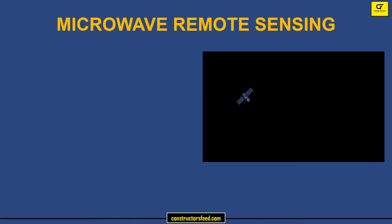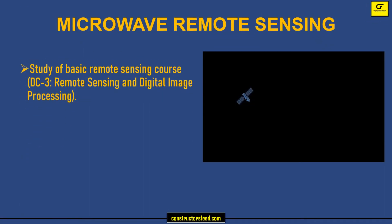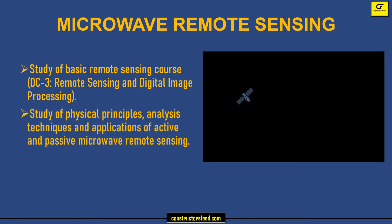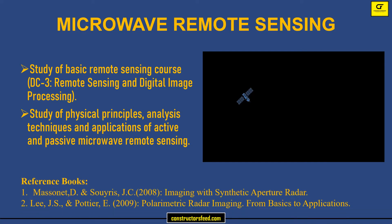Microwave Remote Sensing: Study of basic remote sensing course, DC3 remote sensing and digital image processing. Study of physical principles, analysis techniques, and applications of active and passive microwave remote sensing. These are the reference books.